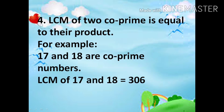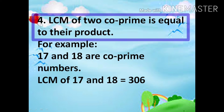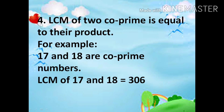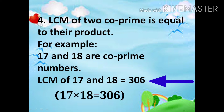The fourth property is that the LCM of 2 co-prime numbers is equal to their product. For example, 17 and 18 are co-prime numbers. LCM of 17 and 18 is equal to 306, that is, 17 multiplied by 18 is equal to 306.